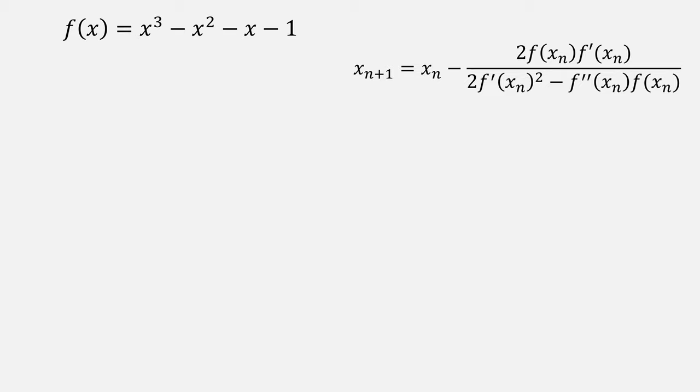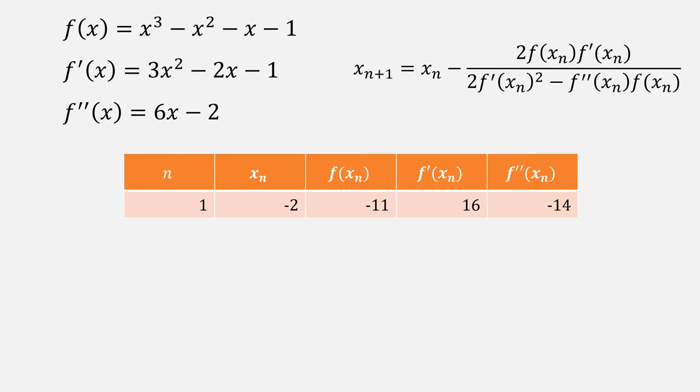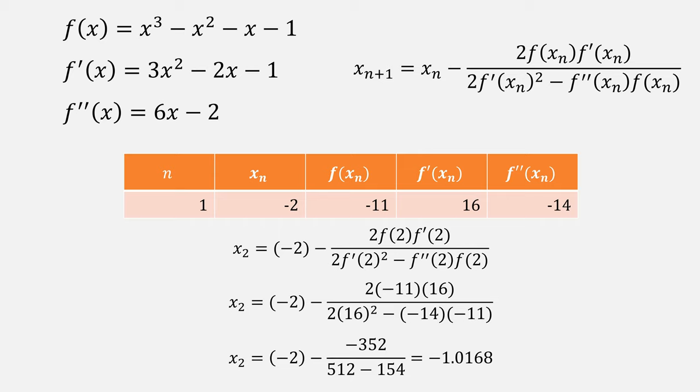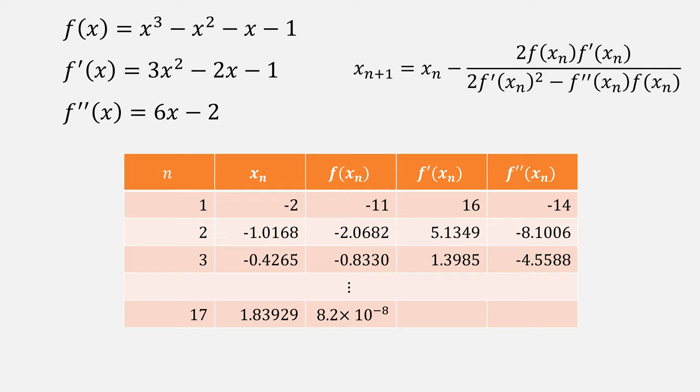After two more iterations, we're able to come up with a solution of negative 0.618. Let's look at this example of x³ - x² - x - 1. We'll need the first and second derivatives, and this time we'll start from a very bad starting guess of minus 2. Do our three function evaluations and then plug everything into Halley's method, giving us a value of negative 1 point something. This one does eventually converge, but after 16 iterations.